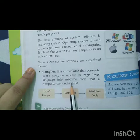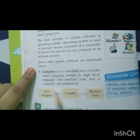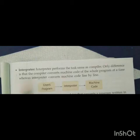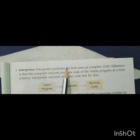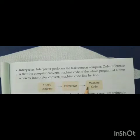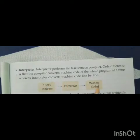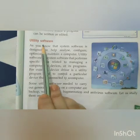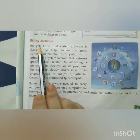Next we studied about the interpreter. The interpreter also works like a compiler, but there is a difference between both of them. The interpreter executes or converts the whole program line by line into machine code, but a compiler converts or executes the whole program in one go. Next, we discussed about utility software — it is also a kind of system software and helps us to analyze and maintain a computer.